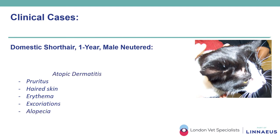This one-year-old male neutered domestic shorthair presented with a skin condition manifested as erythema, excoriations, alopecia and pruritus affecting the haired skin, mostly on the face and ear pinna. A close-up reveals an area of erythema with excoriated papules above the eyelids. The list of differential diagnoses included parasitic diseases, allergic skin diseases, as well as dermatophytosis. After ruling out some differentials, a diagnosis of feline atopic dermatitis was reached.